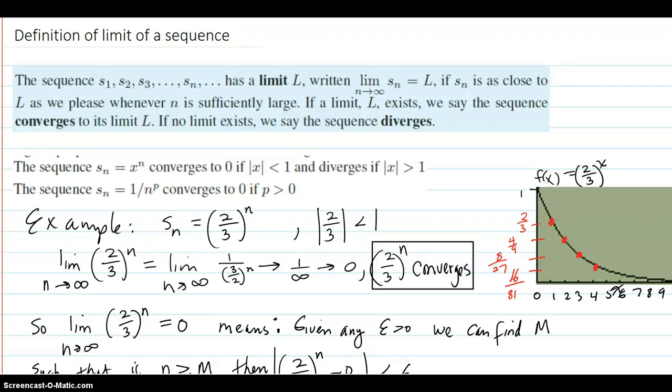The definition of a limit of a sequence: you have your sequence terms. It has a limit L written in the usual limit notation. If Sn, the terms of the sequence, are as close to L as we want whenever n is sufficiently large. In other words, as n gets larger and larger, if the sequence limits out to a value, then that is the limit.